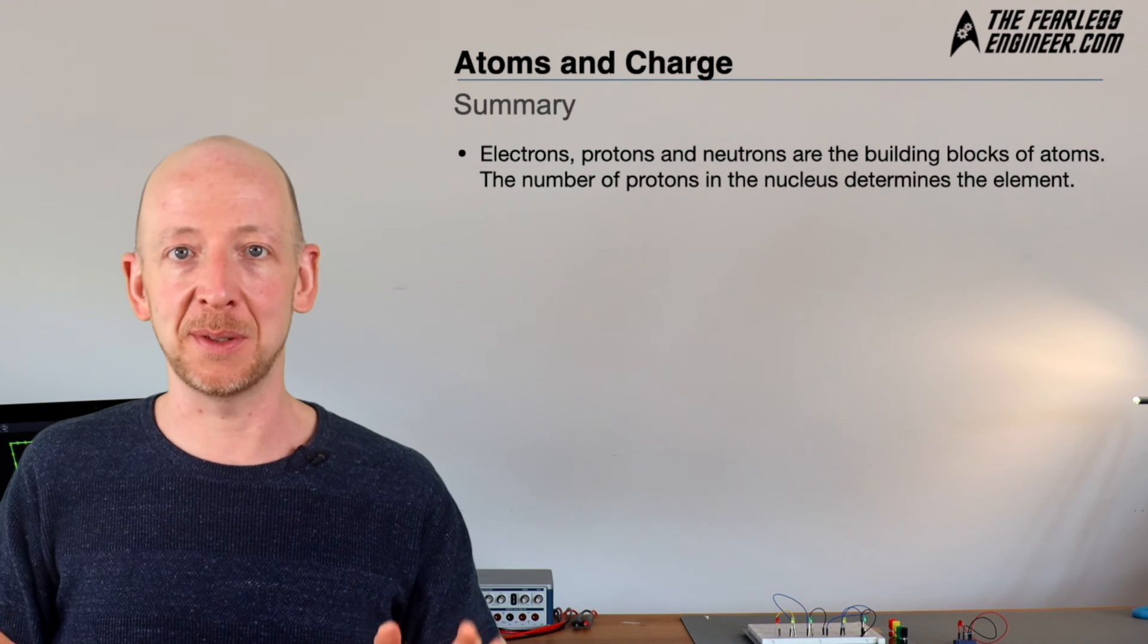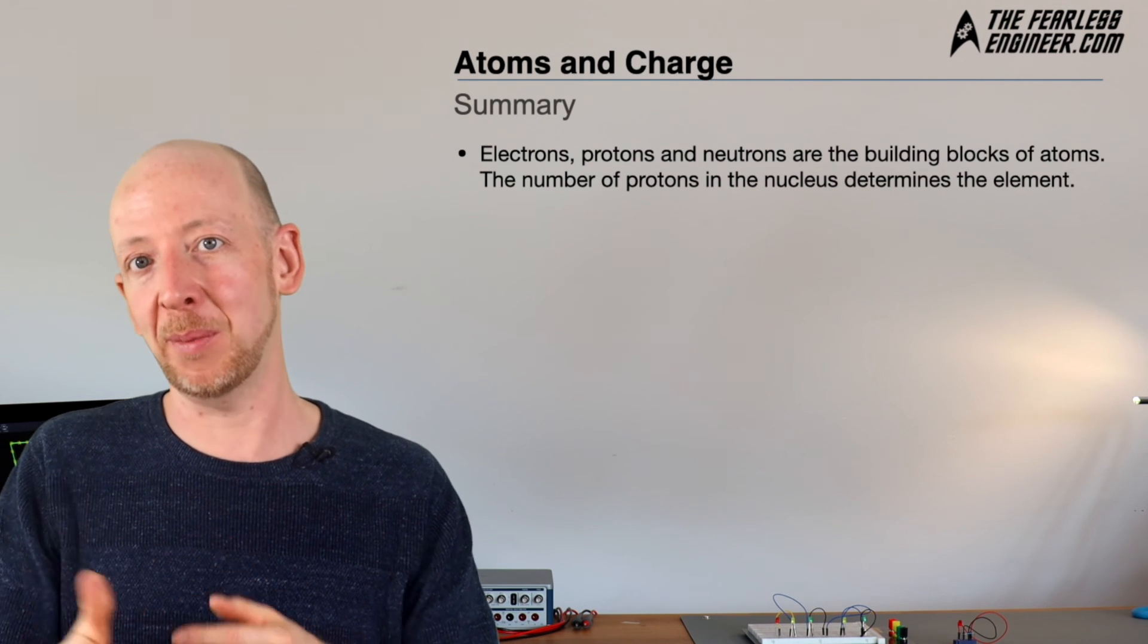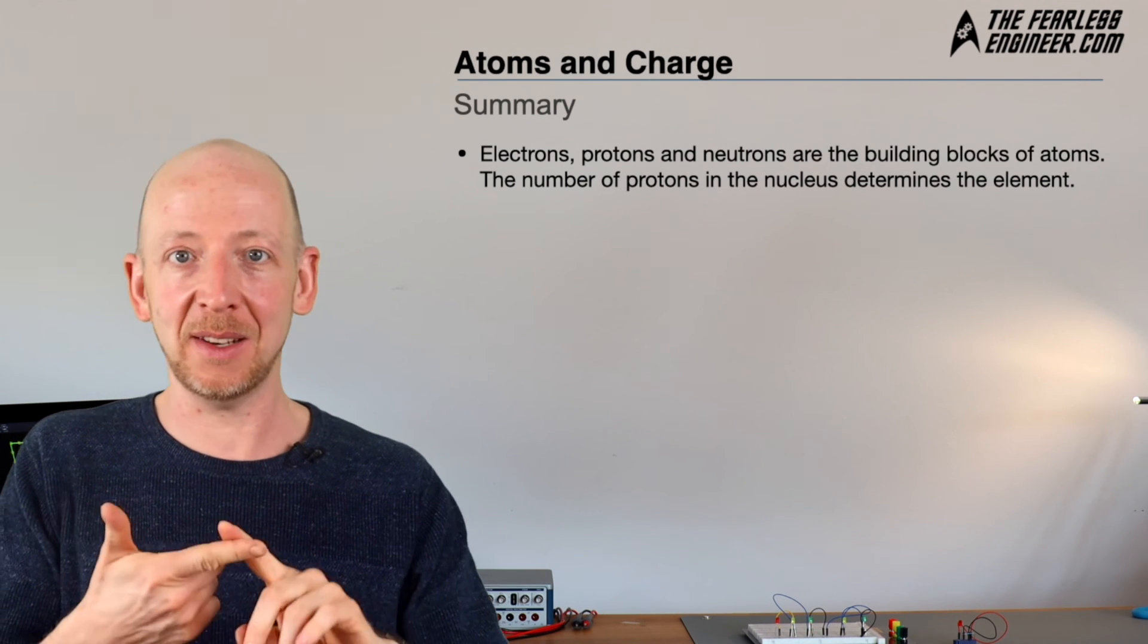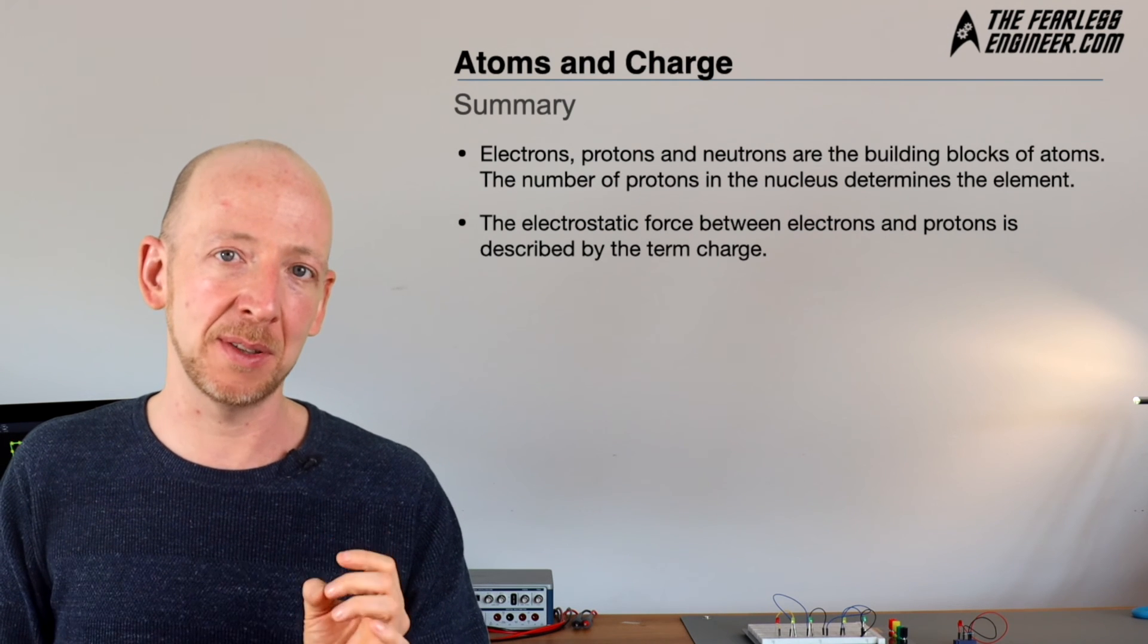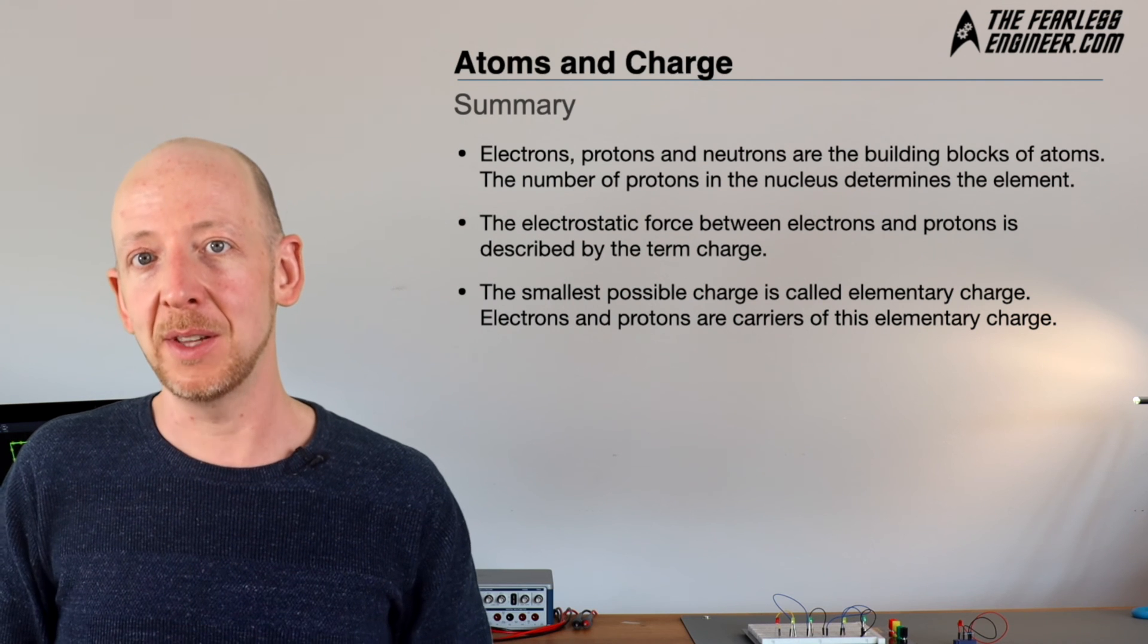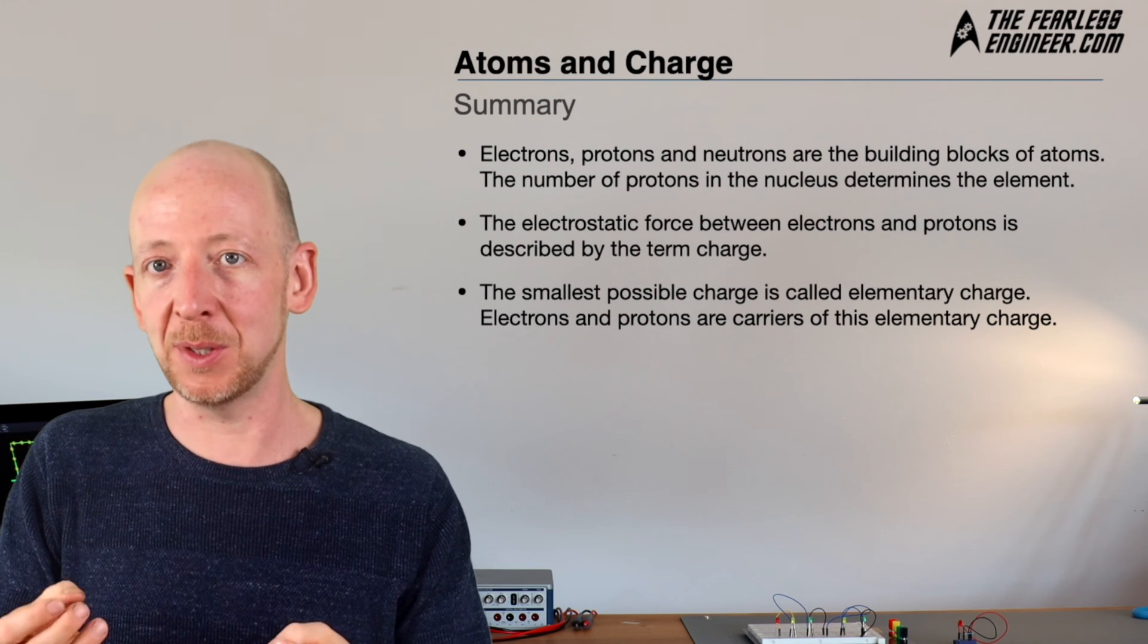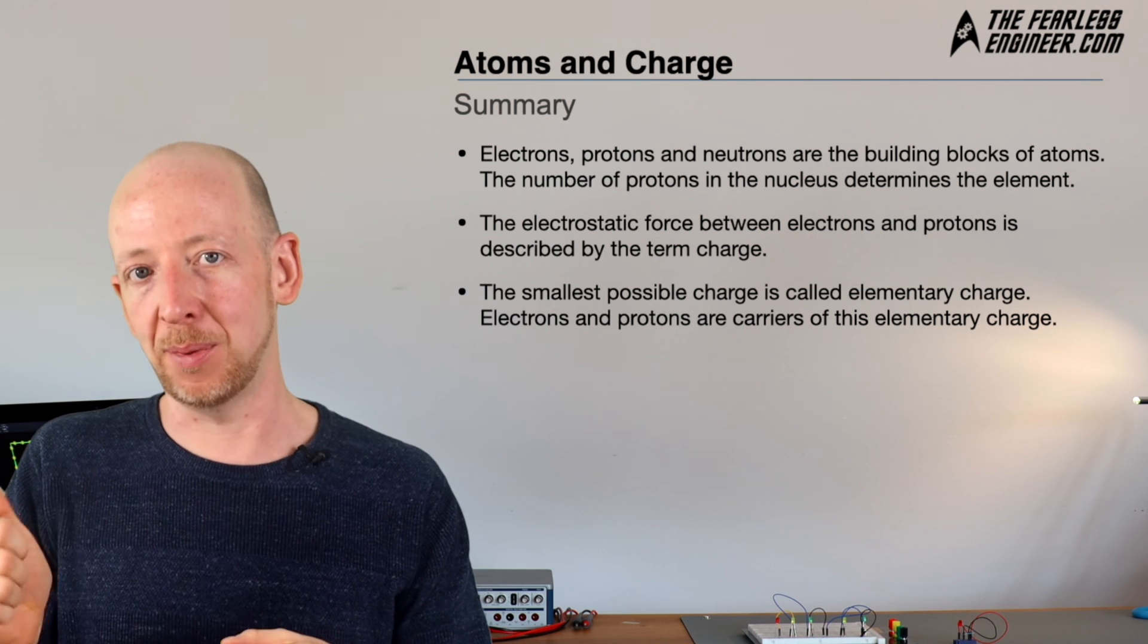Let's make a quick summary. First, electrons, protons, and neutrons are the building blocks of atoms. The number of protons in the nucleus determines the chemical element. Second, the electrostatic force between electrons and protons is described by the concept of charge. Third, the smallest possible charge is called the elementary charge. Electrons and protons are both carriers of this elementary charge, and the difference between them is the sign—electrons have a minus sign, protons have a plus sign.